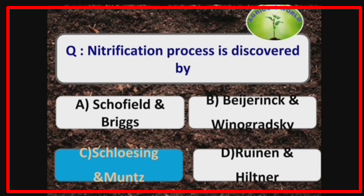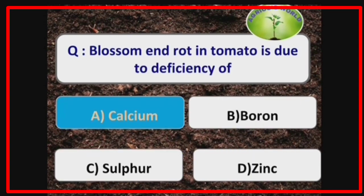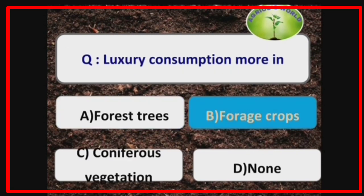The nitrification process was discovered by Winogradsky and Moons. Blossom end rot in tomato is due to the deficiency of calcium. Luxury consumption is more in forage crops and is related to the element potassium.